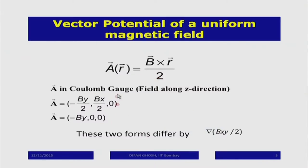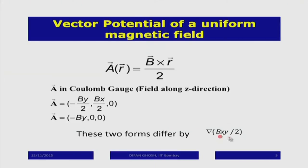You can verify that del×A = B. There are two commonly used choices: first, A_x = -By/2, A_y = Bx/2 (the symmetric form B×r/2); second, A = (-By, 0, 0). Both give del×A = B. The difference between the two forms is the gradient of B·xy/2 — confirming they are related by a gauge transformation. The second form (A = -By x-hat) is more commonly used.